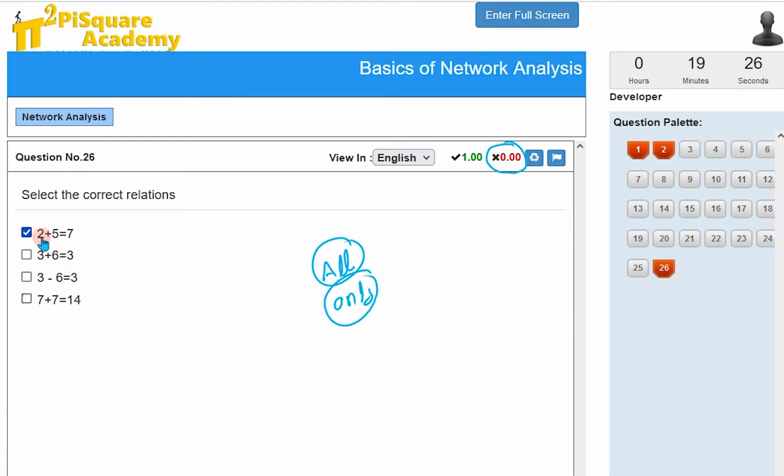Suppose if you select only this one, then you will not get even a half mark. No partial marking also. And suppose if you get these two, then also you will get 0 marks. So, you need to select all correct statements and only correct statements. Then only you will get full marks.